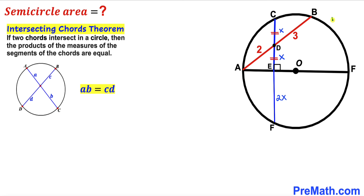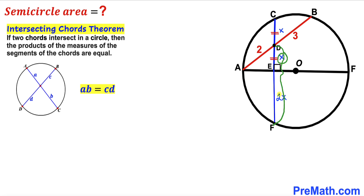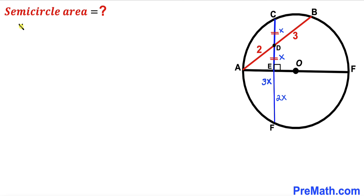Now let's apply this to our given problem. We have two chords AB and CF, and they intersect each other at point D. We can observe that the whole segment DF is going to be X plus 2X, which makes 3X. So according to the intersecting chords theorem, segment CD times segment DE equals AD times DB: X times X equals 2 times 3.